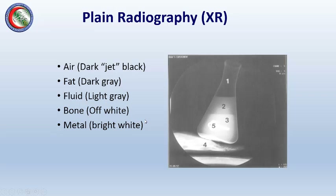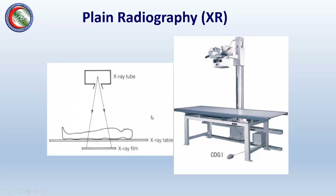These are the five key densities of an X-ray image. In the typical setup we have the X-ray tube — similar to a special lamp that produces X-rays instead of ordinary light. The X-ray passes through the body part we want to image, and we capture the shadow on a special X-ray film. This is how plain X-ray works.